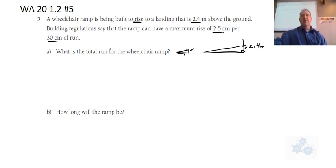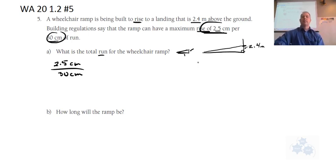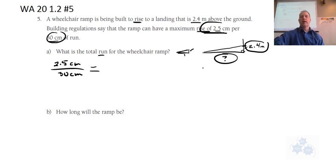So this is what I would do. The rise that's given is 2.5 centimeters over 30 centimeters — that's the given one. And we are given a rise and asked for the run here.